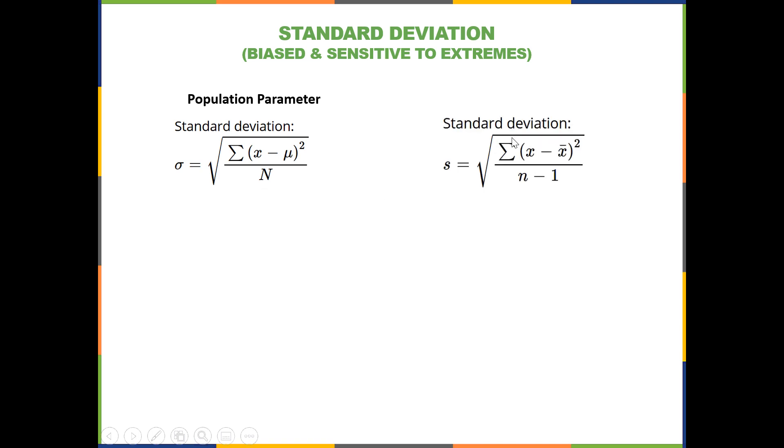The standard deviation from the sample looks identical, except for the difference in the symbols used. S for the sample standard deviation, X bar for the sample mean, and dividing by n, the lowercase n, but now we're subtracting one before we do that division.